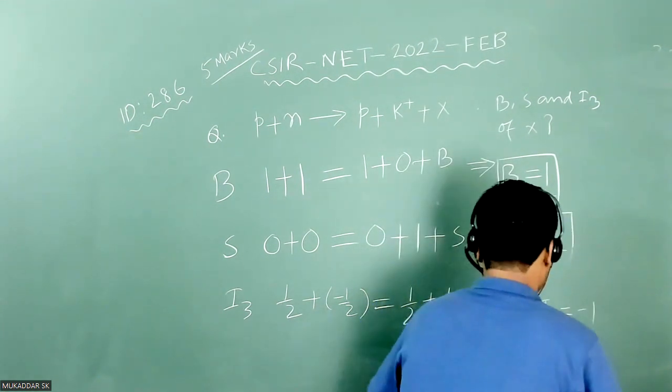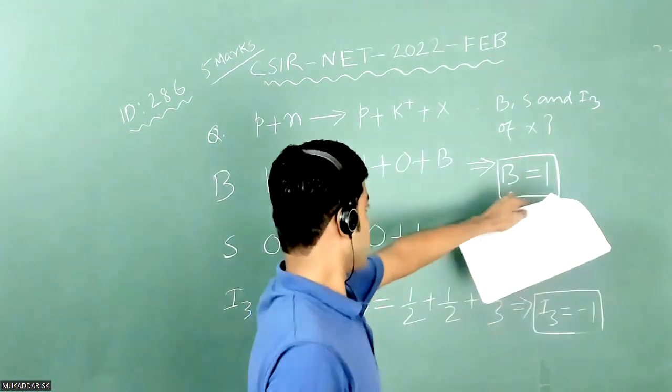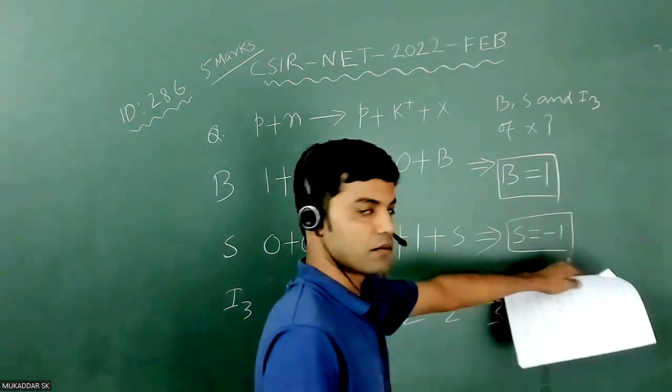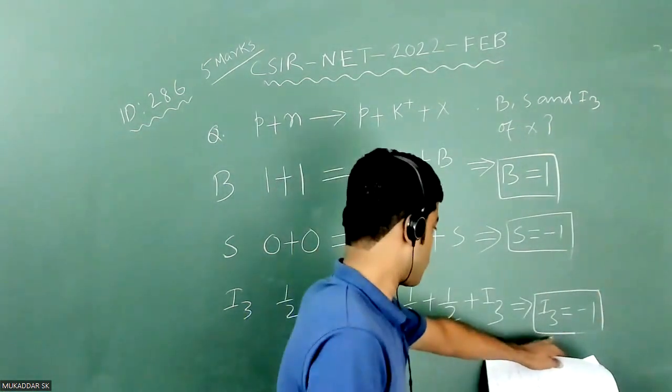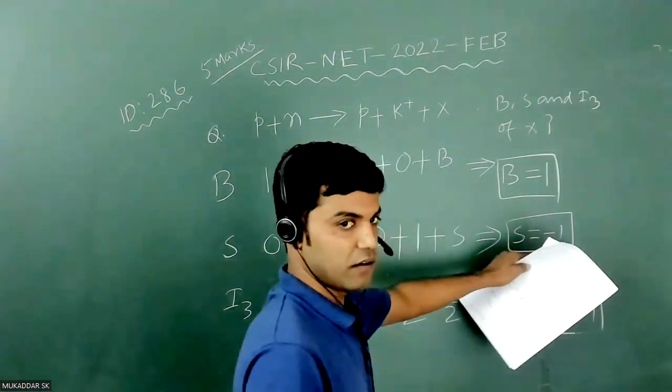So we got three quantum numbers for x particle. Baryon quantum number is plus one. S quantum number is minus one. And i3 of x particle is minus one. Here s means strangeness. Thank you.